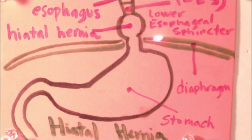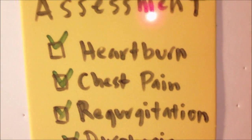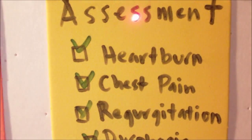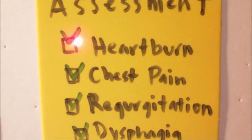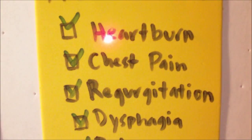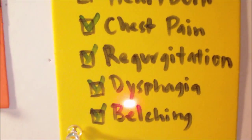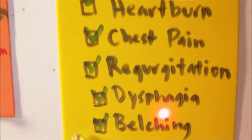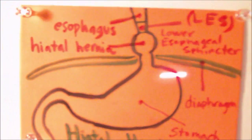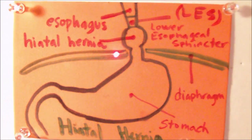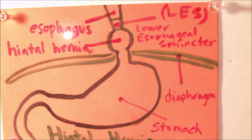With that in mind, we can say that a patient with hiatal hernia has very similar symptoms to a patient with GERD. Basically we're assessing the patient for symptoms of heartburn, chest pain, regurgitation, dysphagia, and belching. The symptoms of both diseases are basically similar in the fact that they are due to the reflux of gastric contents back to the esophagus.